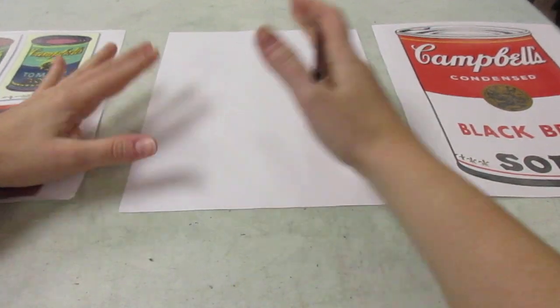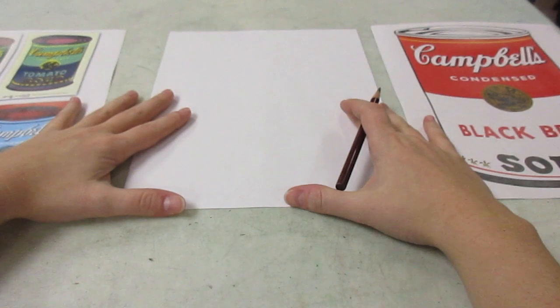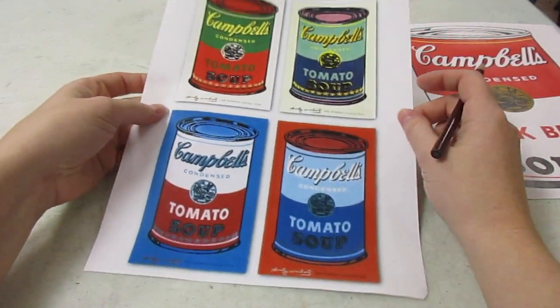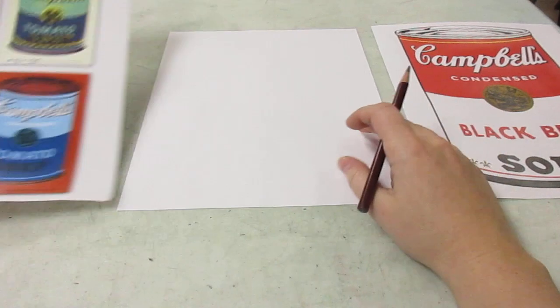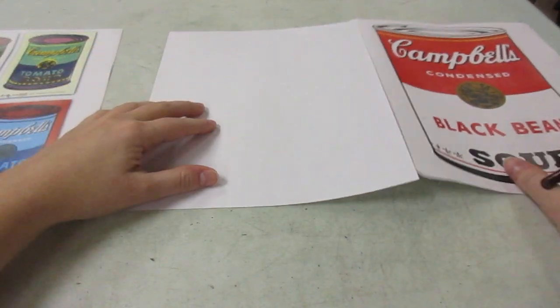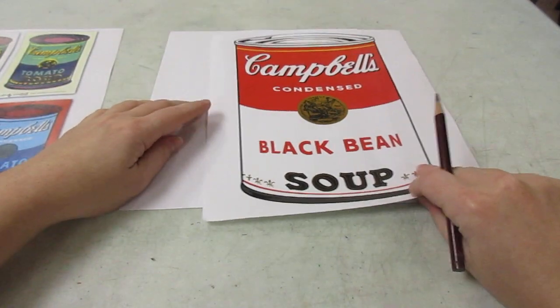So we're gonna try to make it big, fill up the paper. Later we'll try to make more than one and do different colors, but to start to practice drawing your can and make it look 3D, we're gonna just draw one.